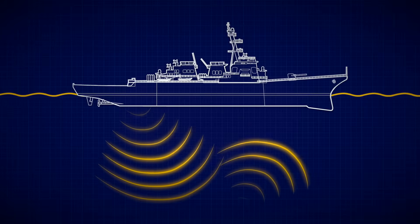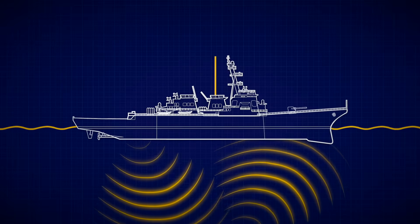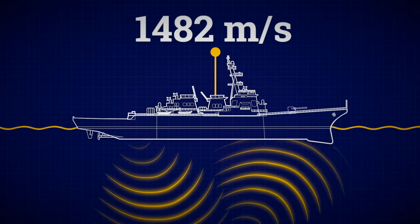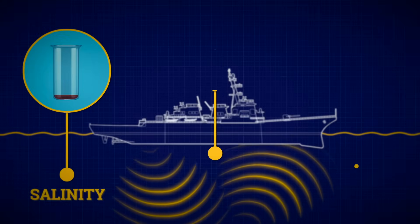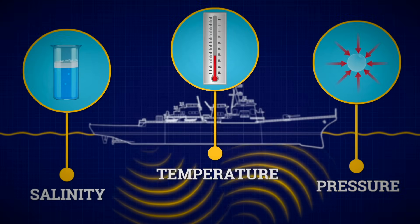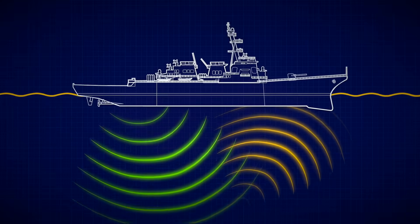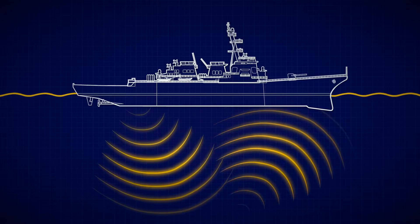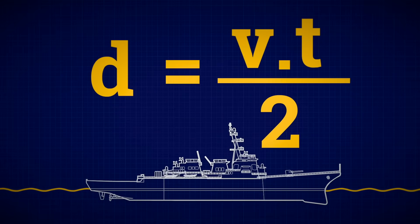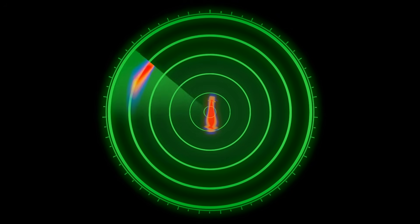It does that by knowing what the speed of sound is in water, which is roughly 1500 meters per second. But that varies a little due to salinity, temperature and pressure, multiplied by how long it took that ping to get there and back again, then divided by two. That can tell them how far away an object is.